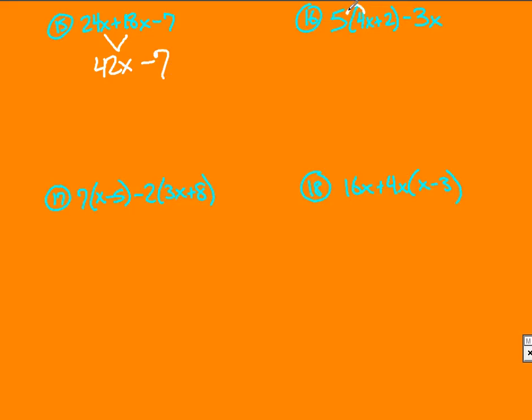In 16, I need to distribute this first. Before I distribute, check and make sure the part on the inside can't be simplified. It cannot, so I distribute. That becomes 20x plus 10 minus 3x. Now I can look for like terms. 20x and minus 3x becomes 17x and plus 10 on the end.